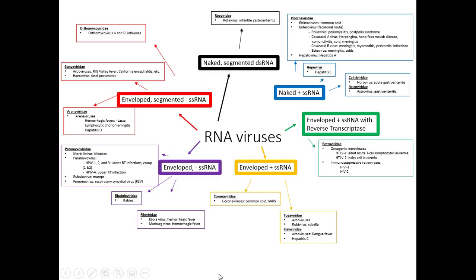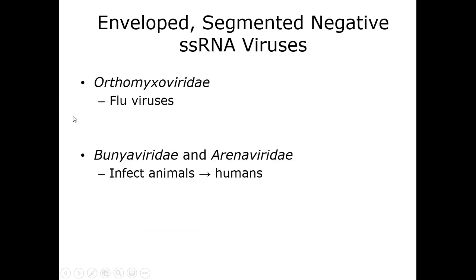This diagram uses color coding to show the big families and dividers. Starting at the top left in red: these viruses have an envelope, their RNA is segmented — not one long strand — and they have negative sense single-stranded RNA, so they must first make a positive strand to replicate. This group includes the orthomyxoviridae, bunyaviridae, and arenaviridae.